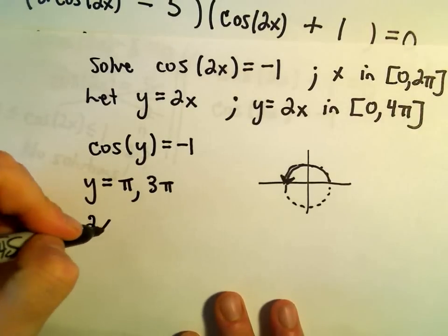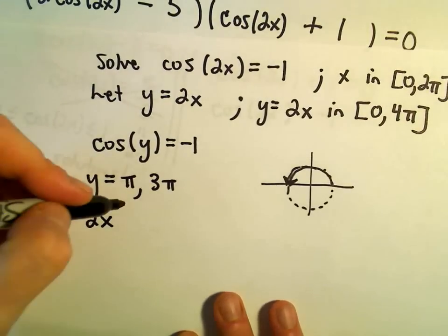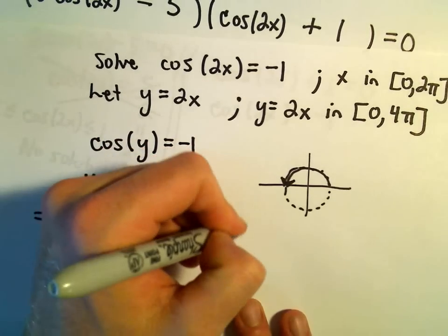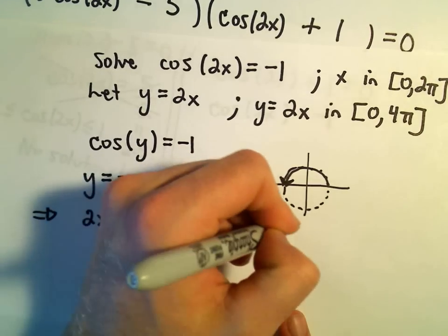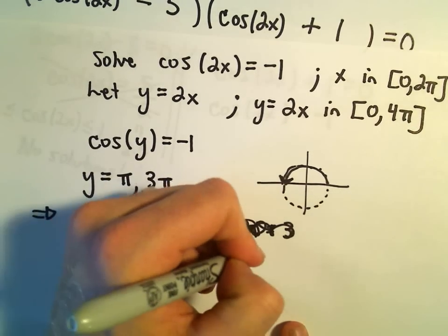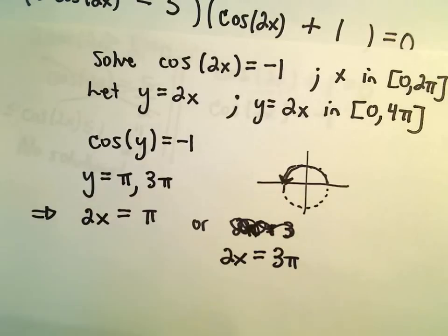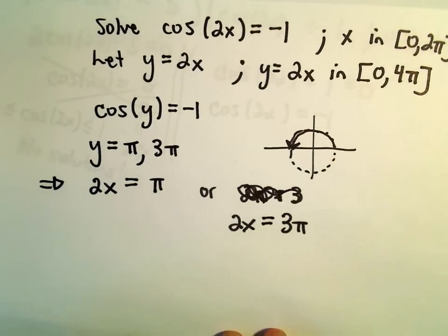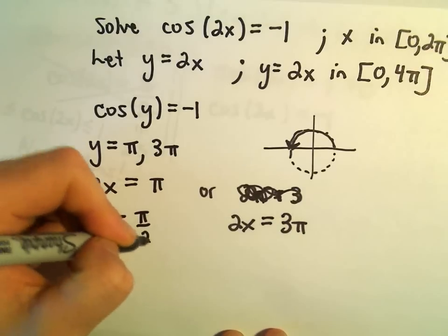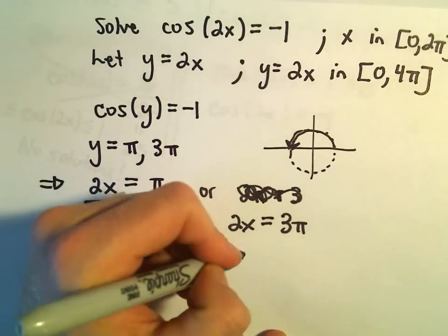But y was the same thing we said as 2x. So either 2x has to equal pi or 2x is going to have to equal 3 pi. Well, each one of these is easy to solve. Just divide by 2. We'll get x equals pi over 2 as a solution to the first one. We'll get x equals 3 pi over 2 for our second equation.